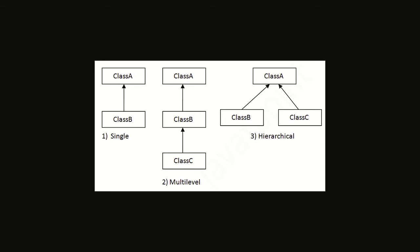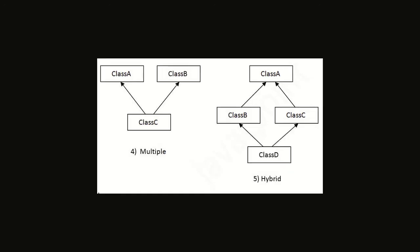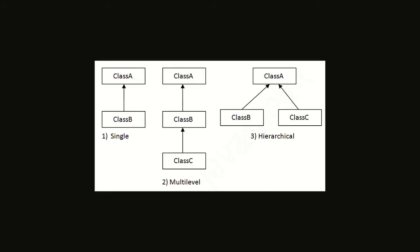So guys, here you can see some structure. In my previous video we talked about inheritance — how to implement one class's methods and properties inside a second class. In Java, on the basis of class, we have single inheritance, multi-level inheritance, hierarchical inheritance, multiple inheritance, and hybrid inheritance. Let's see them one by one.